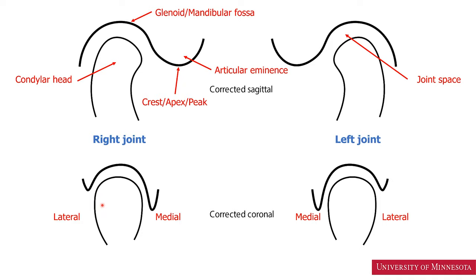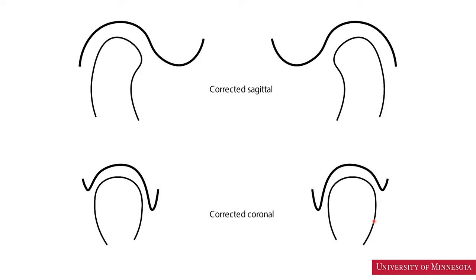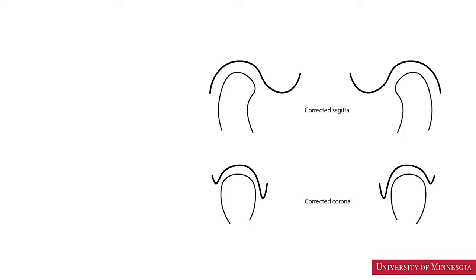On the corrected coronal views, the lateral surface is here for the right joint and the lateral surface is here for the left joint. With this knowledge of the basic anatomy of the temporomandibular joints, let us continue with the principles of interpreting TMJ images on a CBCT scan.